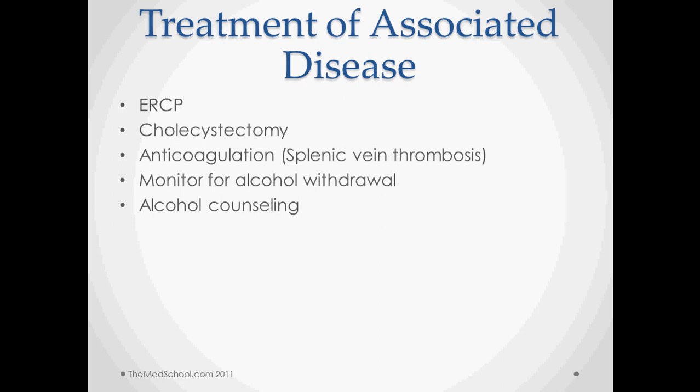Because many cases are caused by gallstones, ERCP is used both to identify the cause and to extract the gallstones. Cholecystectomy is commonly performed to prevent further injury from gallstones. Anticoagulation may be necessary if there is splenic vein thrombosis, though care must be taken given the bleeding risk. For alcohol-related cases, monitoring for alcohol withdrawal is important — delirium tremens is potentially life-threatening — and upon release, patients should receive counseling for alcohol use.